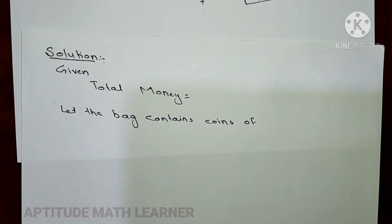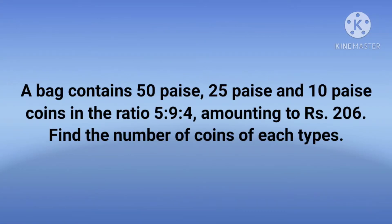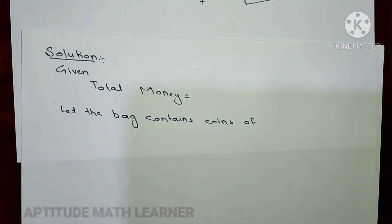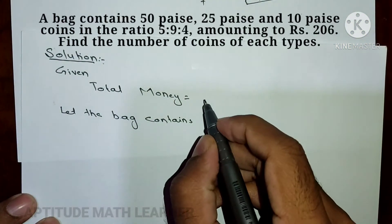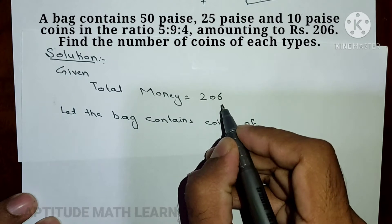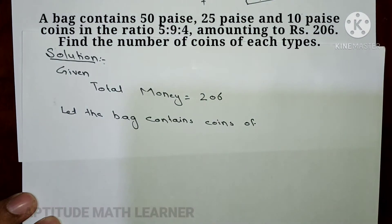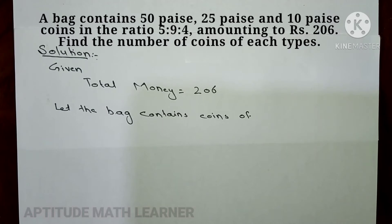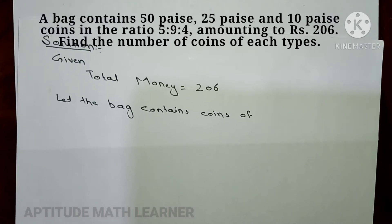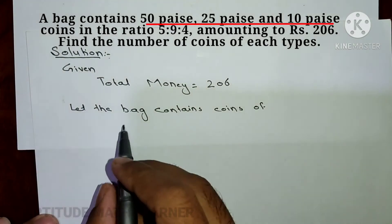A bag contains 50 paisa, 25 paisa, and 10 paisa coins in the ratio 5:9:4, amounting to rupees 206. Find the number of coins of each type. So here we have a total amount of rupees 206.